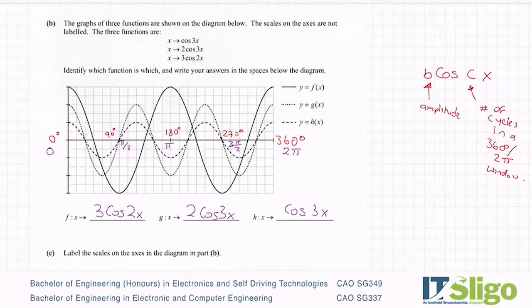And then on our y-axis, our amplitude is one, two, and three. And of course minus one, minus two, minus three.